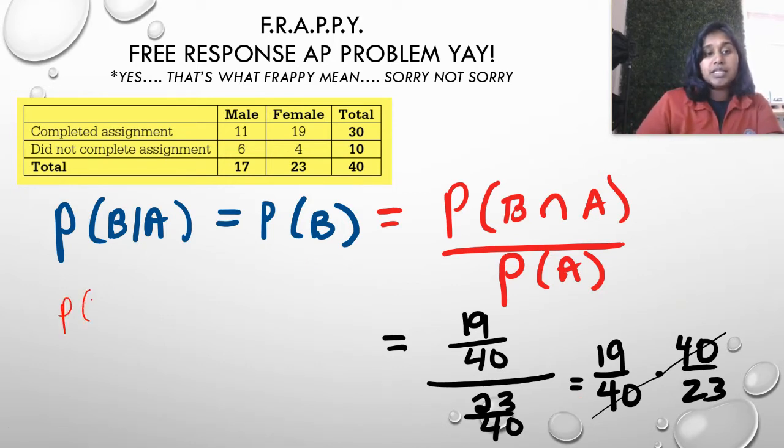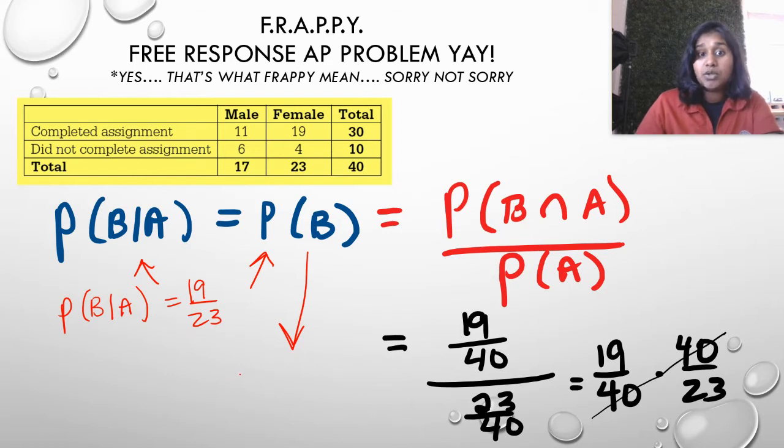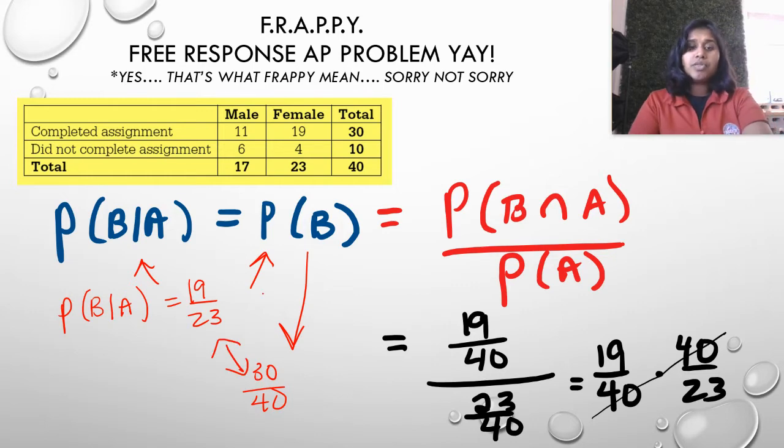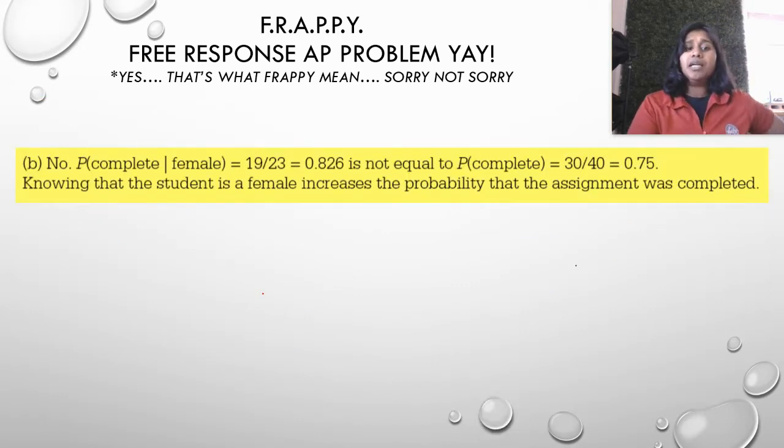I do fraction mathematics, and I end up with just the probability of 19 over 23. So we end up with a conditional probability, P of B given A is equal to 19/23. And remember, we're solving this to be equal to this, probability of just B, the completed assignments we did in question A. And so that was 30 out of 40. Are these two statements equal? No. So they are not independent.